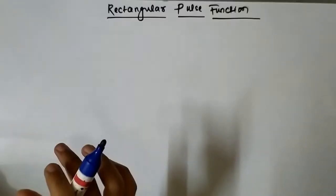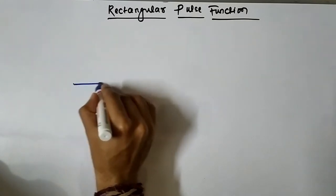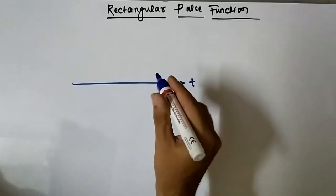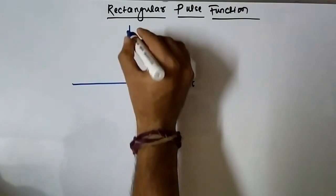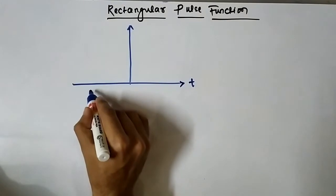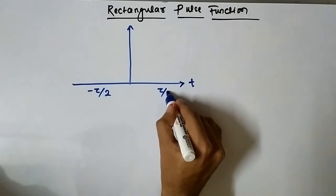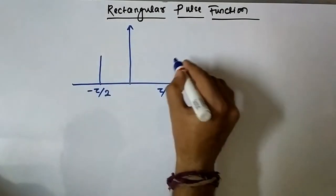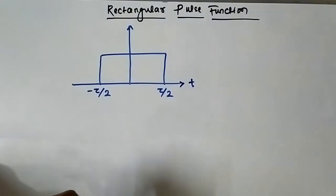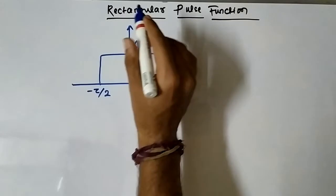So let us first draw the rectangular pulse function. It looks something like this — the time axis and the amplitude axis. This is the rectangular pulse function.